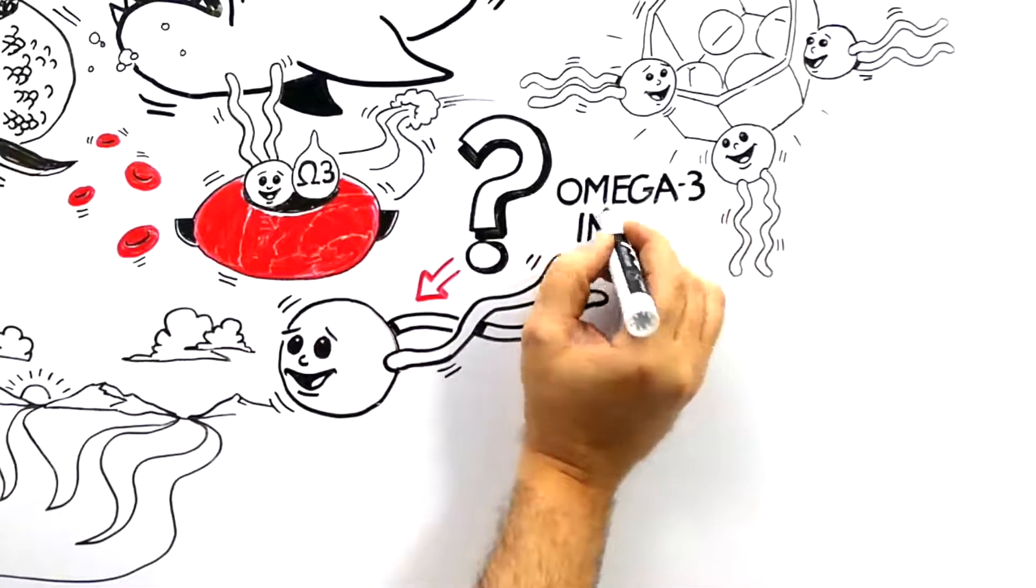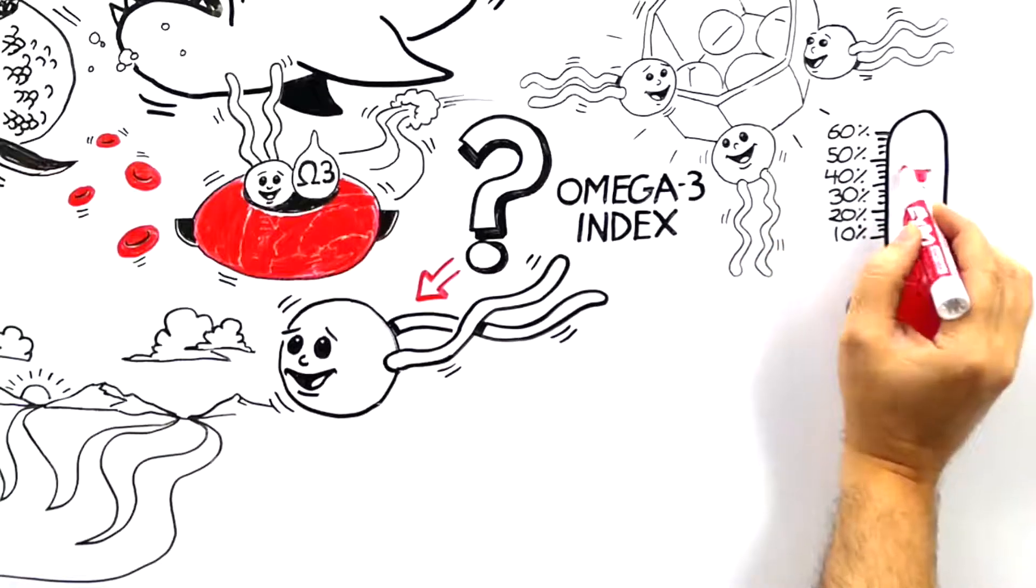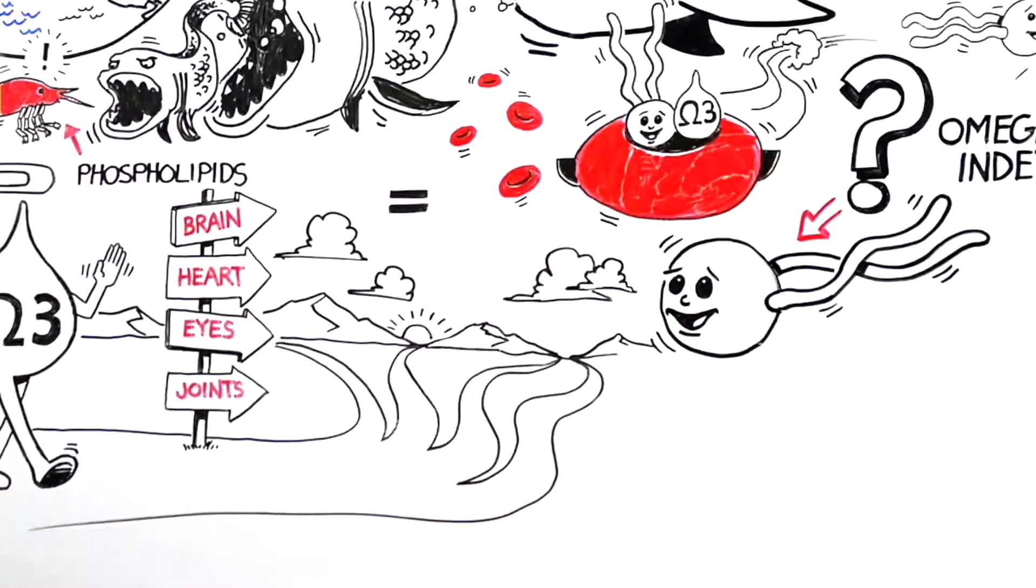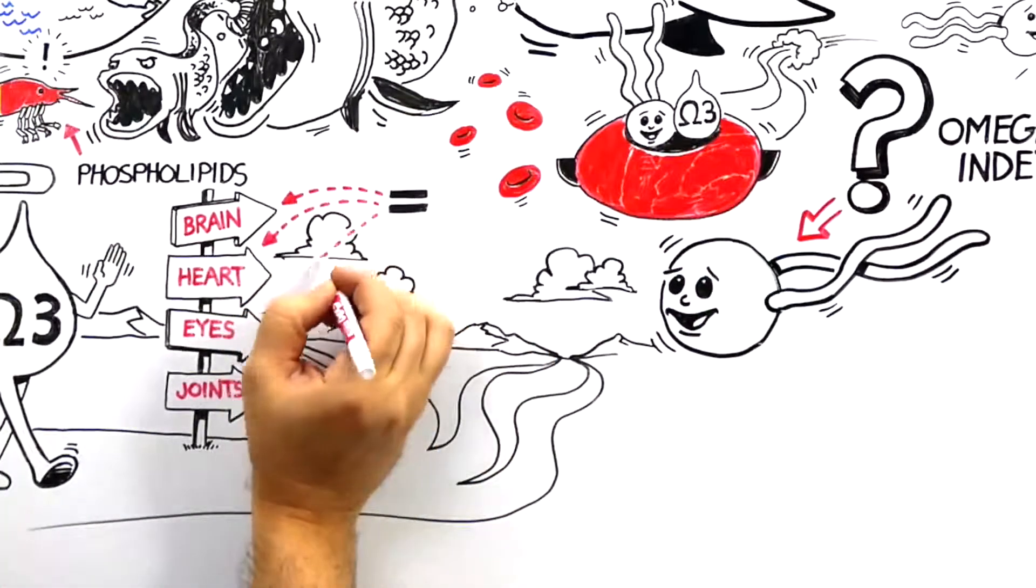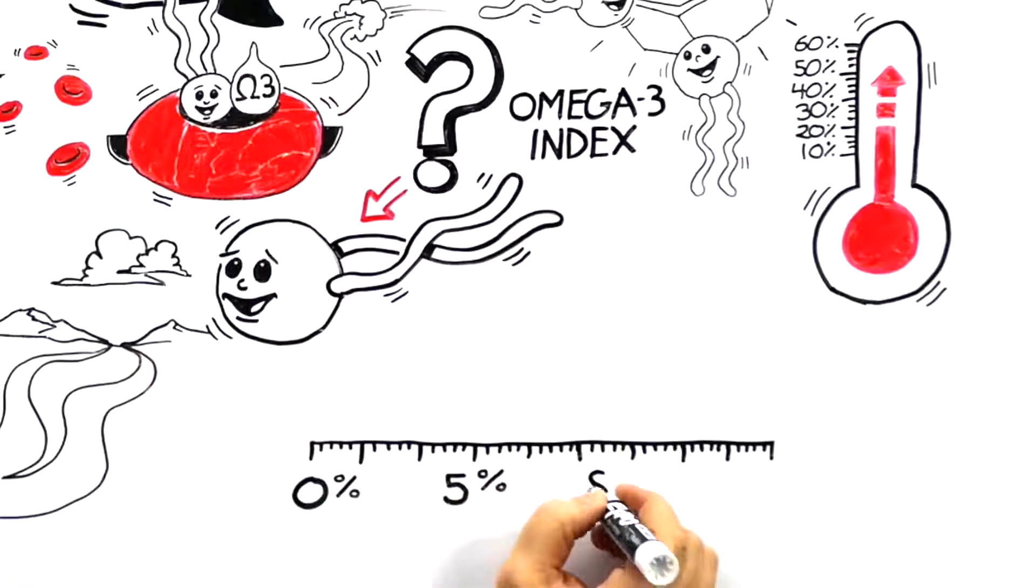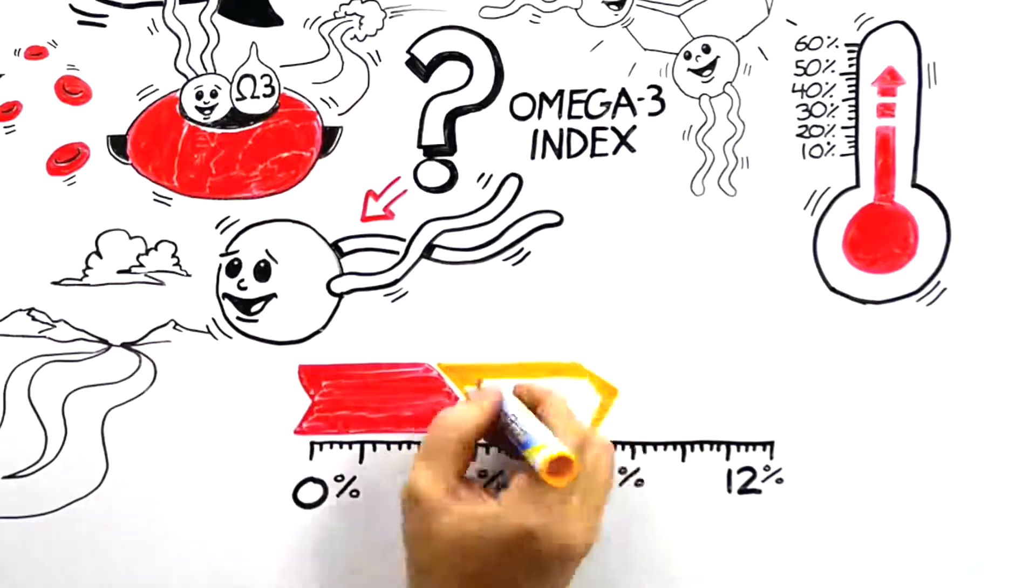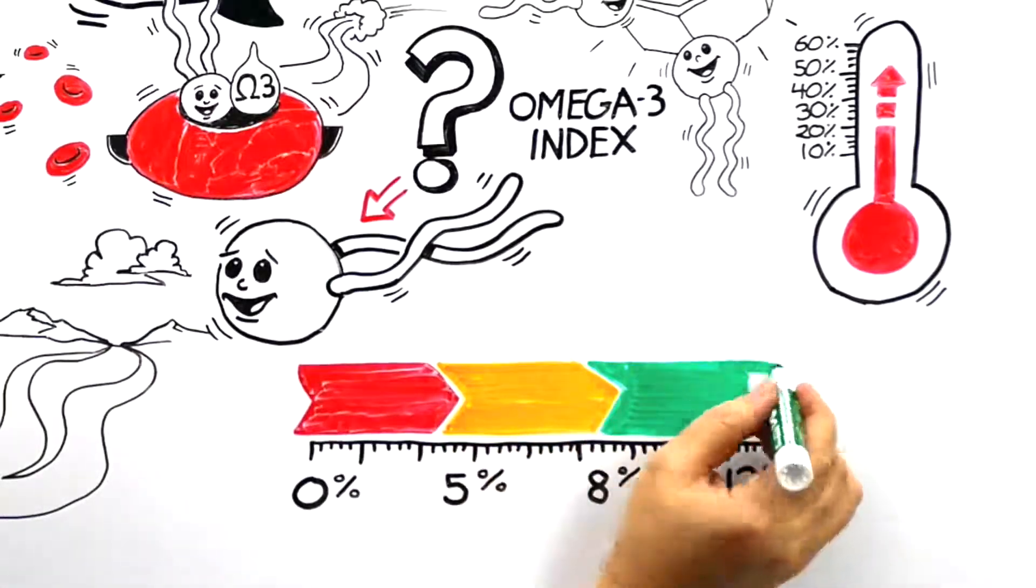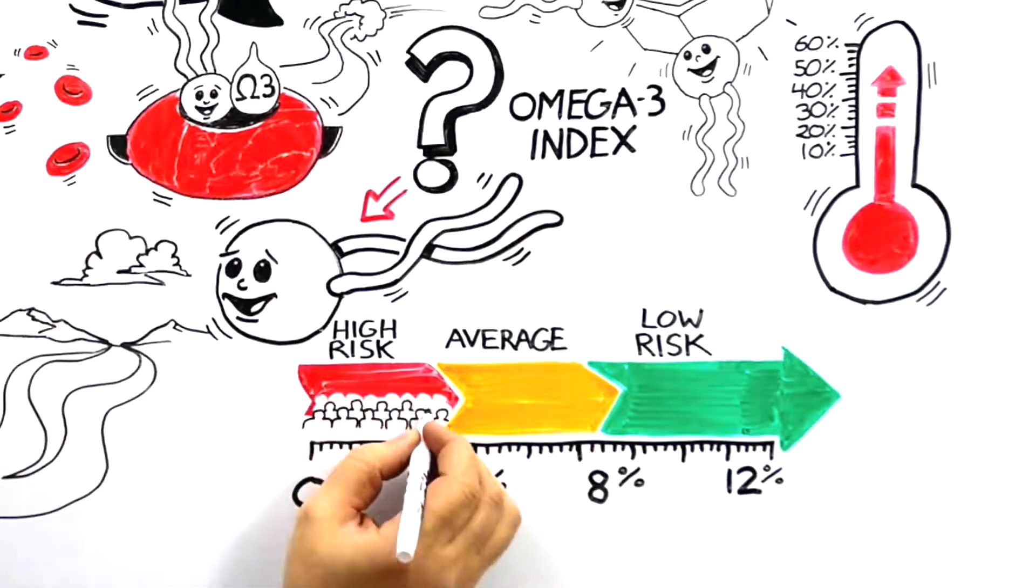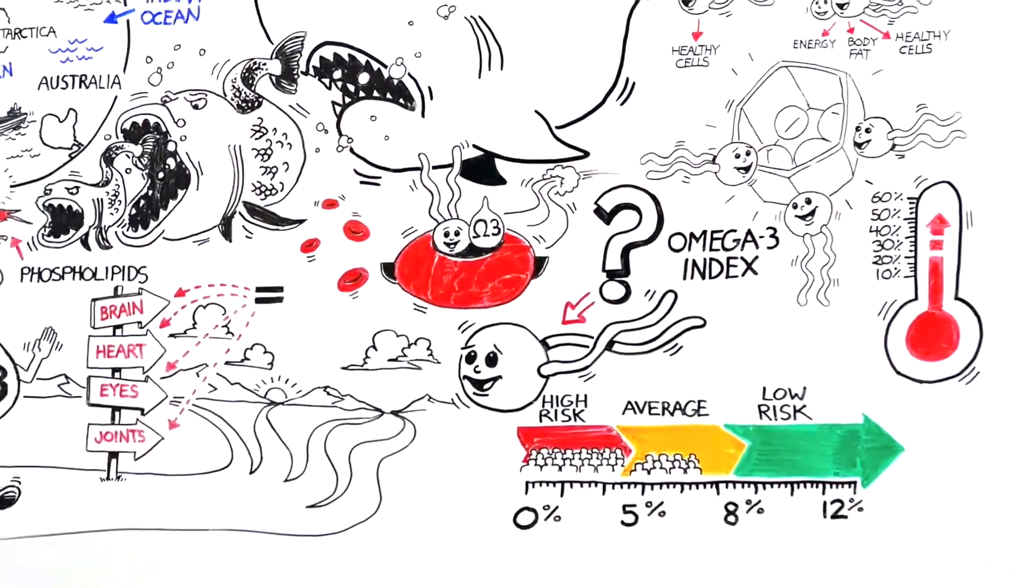By using something called the omega-3 index, you can measure the percentage of EPA and DHA in the red blood cell fatty acids. The presence of omega-3 fatty acids in red blood cells is a reflection of the amount of omega-3s in your tissues and organs. An omega-3 index of 8% or above is considered optimal, while a low omega-3 index indicates a higher risk of sudden cardiac death and potentially other health issues. Unfortunately, many consumers hover somewhere in the high risk and average area, suggesting a need to increase their long-chain omega-3 consumption.